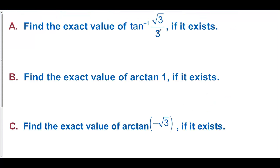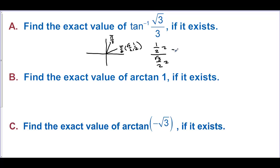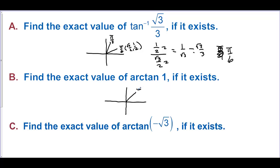Find the exact value of inverse tangent of square root of 3 over 3, if it exists. This is positive, so we look at quadrant 1. The choices are pi over 6 or pi over 3. At pi over 6 the point is square root of 3 over 2, one half. Sine over cosine gives one half over square root of 3 over 2, which equals 1 over square root of 3, which is square root of 3 over 3. So the answer is pi over 6. Find the exact value of arctangent of 1. Tangent equals 1 at pi over 4, since sine over cosine at that angle gives square root of 2 over 2 divided by square root of 2 over 2, which equals 1. The answer is pi over 4.